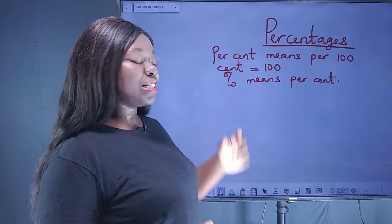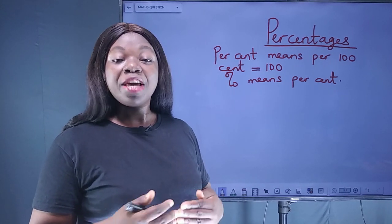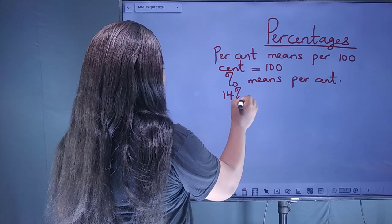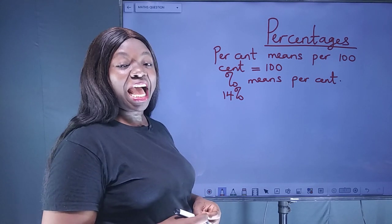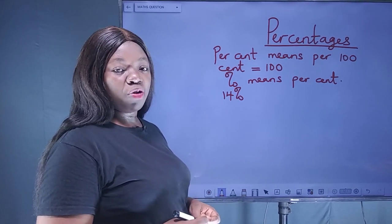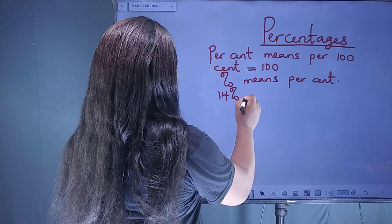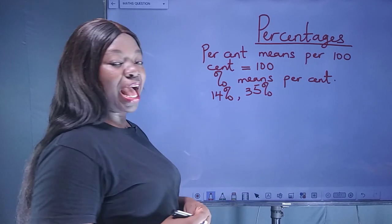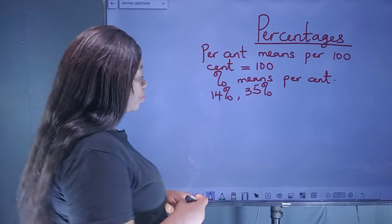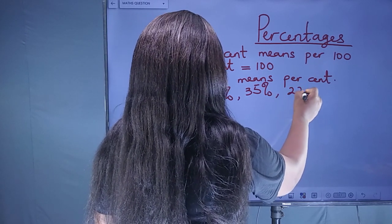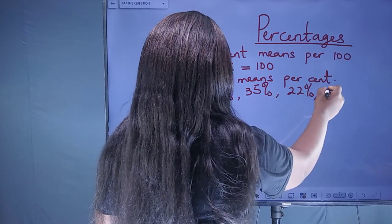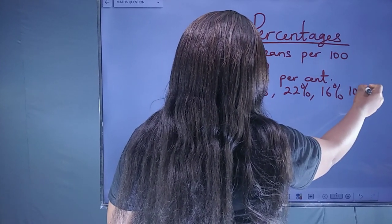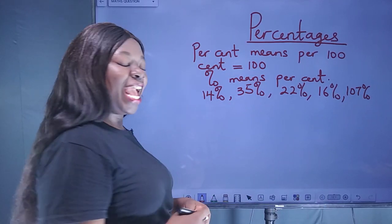Whenever you see a number with this sign, it is a percentage. For example, 14 with this sign is pronounced as 14 percent, and 35 with this sign is 35 percent. We can also have 22 percent, 16 percent, 107 percent, and so on.